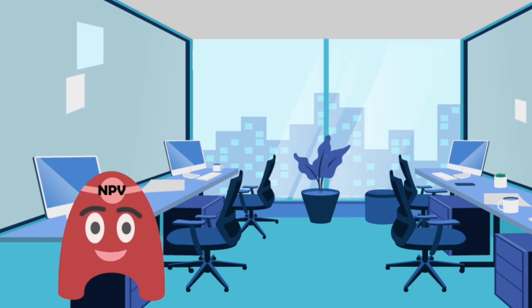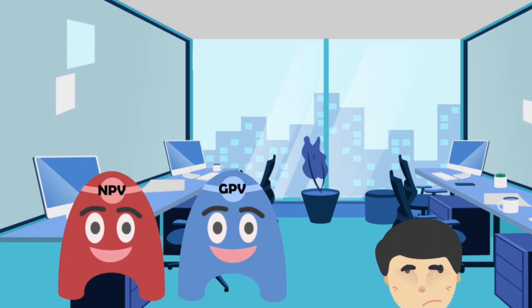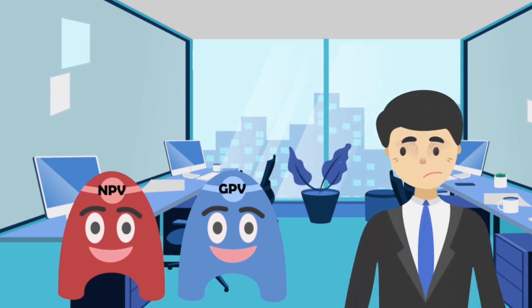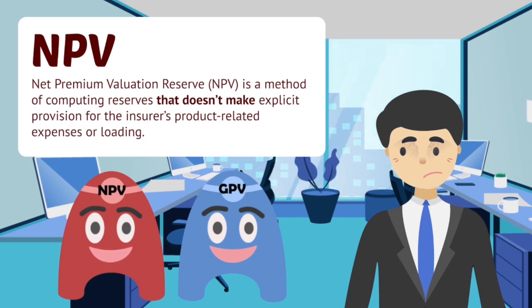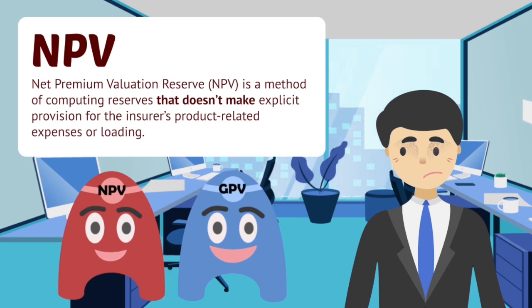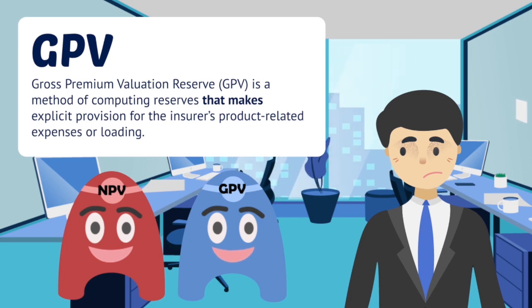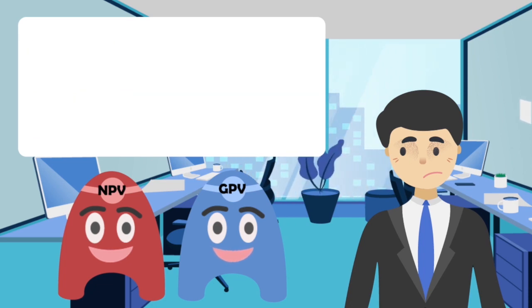Hey, am I being called? Surely, someone didn't know about us quite well yet. What is this sorcery? Did you guys appear to answer my question? Well, I think we should introduce ourselves first. Hello, I'm NPV. Net Premium Valuation Reserve is a method of computing reserves that doesn't make explicit provision for the insurer's product-related expenses or loading. Hi, I'm Gross Premium Valuation Reserve — you can call me GPV. I'm a method of computing reserves that makes explicit provision for the insurer's product-related expenses or loading.